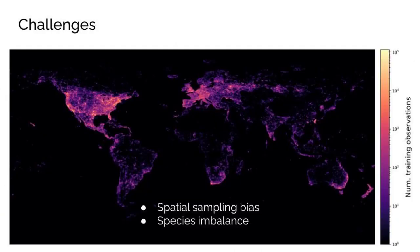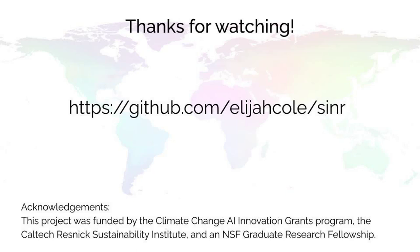Many challenges remain. The data from community science platforms has significant spatial biases and exhibits a long-tailed class distribution. We do not explicitly account for either in our work. Thank you for watching. Code and data are available on our GitHub page.